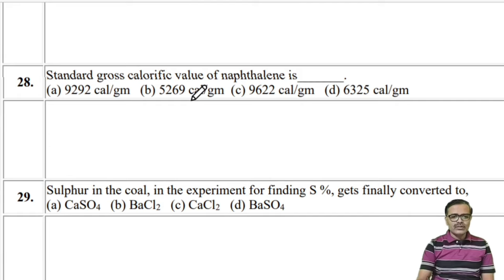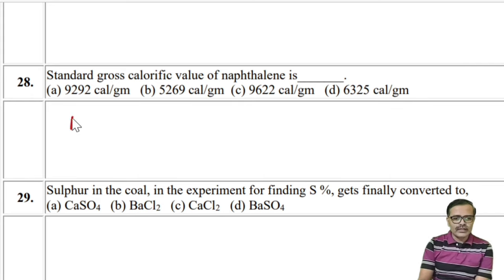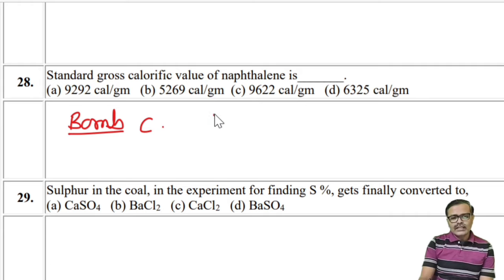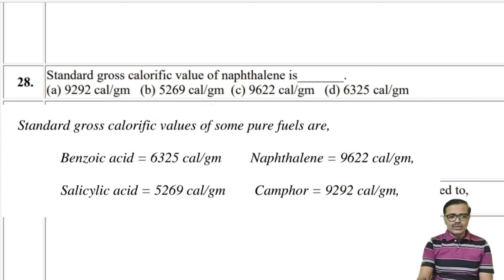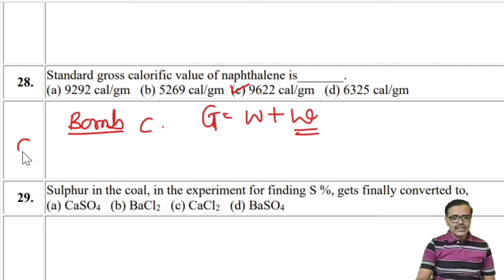The standard gross calorific value of naphthalene is used in bomb calorimeter calibration — to find the water equivalent (small w). Using a fuel of known calorific value is called the standard gross calorific value. For naphthalene, the standard GCV value is 9622 kcal/kg. There are four standard substances: camphor, naphthalene, benzoic acid, etc. The answer is C.